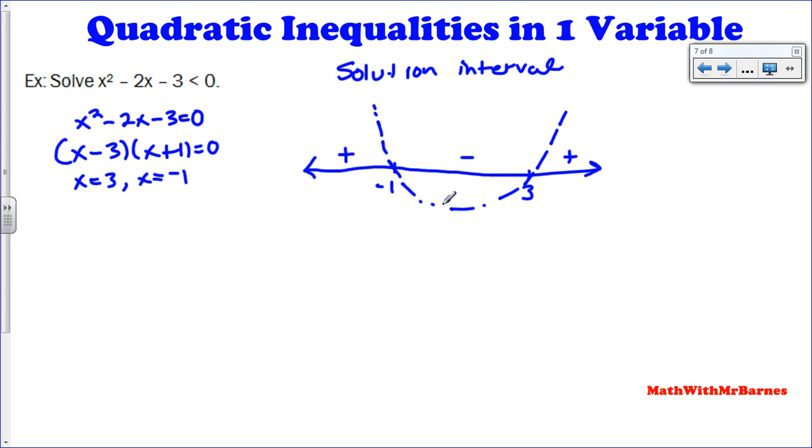Now the only thing we need to consider is negative 1 and 3 included. And the answer is absolutely not because it doesn't have the equal to part. So at these places, we put empty circles. So if I actually put negative 1 in here, I would have 0 on this side is less than 0. That's not true. So therefore, it's not part of the solution.